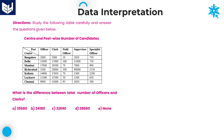Next question: what is the difference between total number of officers and clerks? We need to calculate total officers first. Adding the officer values: 2,000 + 15,000 = 17,000; plus 17,000 = 34,000 for the first three centers. Then 9,000 plus 35,000 equals approximately 12,500 combined.